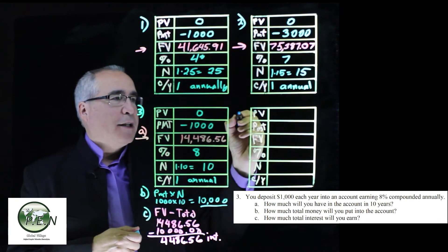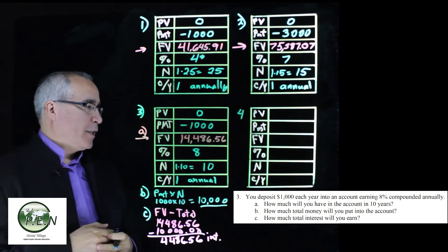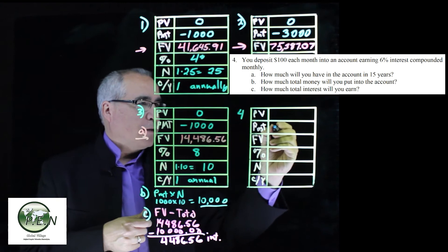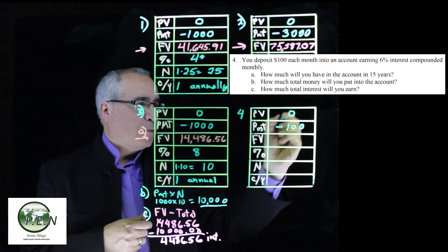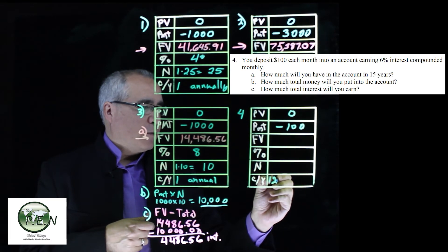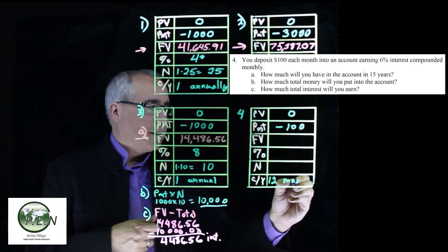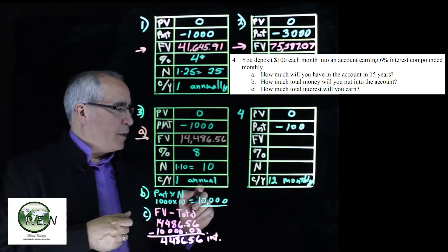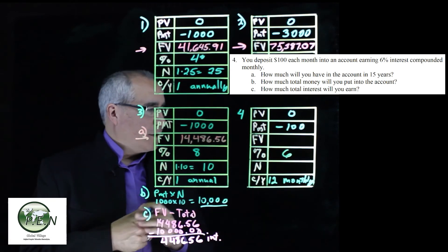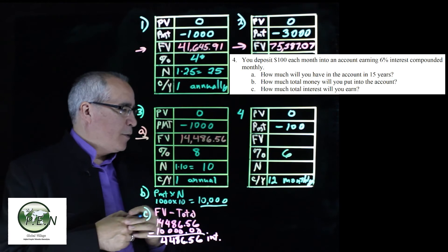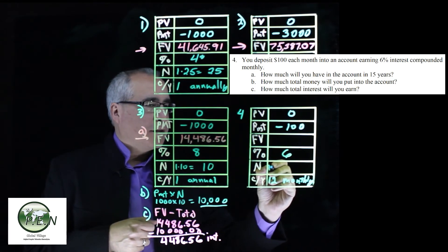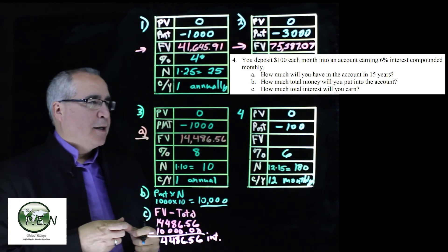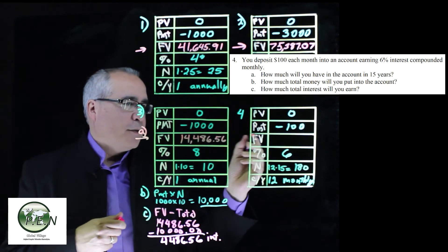For question number four, similar type thing with some slightly different figures. We're depositing $100 each month. So that's under payment is minus $100. No present value. We are going to do this each month, so there's a 12 here or monthly. We're going to have 6% interest compounded monthly. And we're going to leave it on deposit for 15 years. So it's going to be 12 times 15, which is 180 periods.